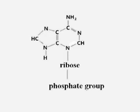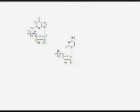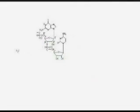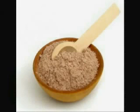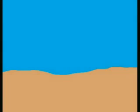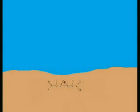Biochemists think they know how the phosphate group formed, and they're now trying to find out how the ribose is attached. Once nucleotides formed, the next step was to join together to make chains called polynucleotides. In the 1980s, researchers found that a clay called montmorillonite, which was abundant on the primordial sea floor and in hot pools of water on land, is the perfect catalyst for this process.